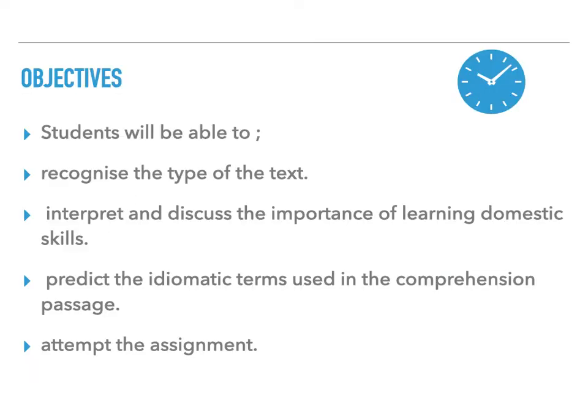The set objectives are: students will be able to — number one, recognize the type of the text. That's the first thing you have to focus on. You just look at the text and find out which kind of text it is — whether it's a narrative, a story, a novel, or what. Second is to interpret and discuss the importance of learning domestic skills — the things we do in our households. You have to focus on why we learn them.